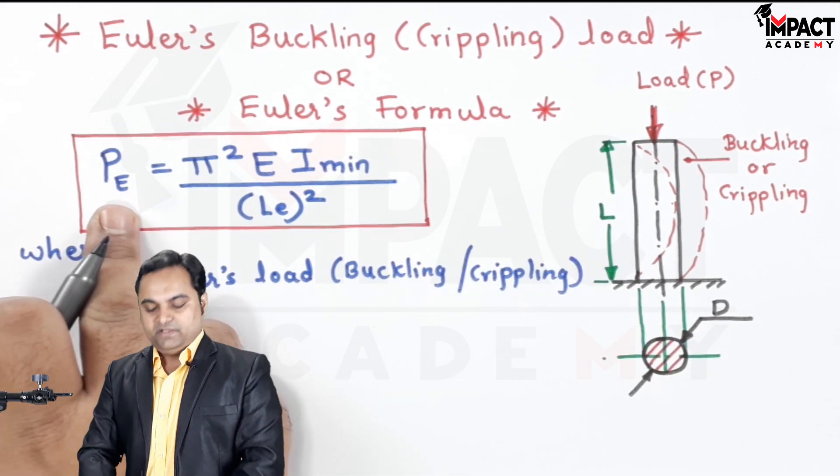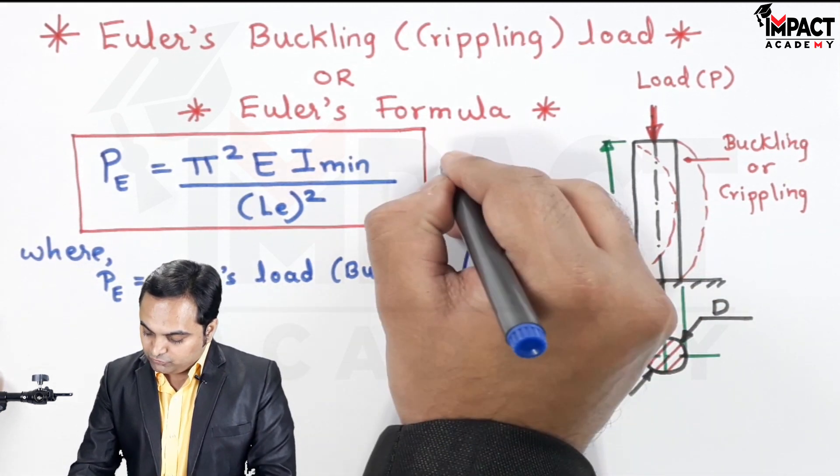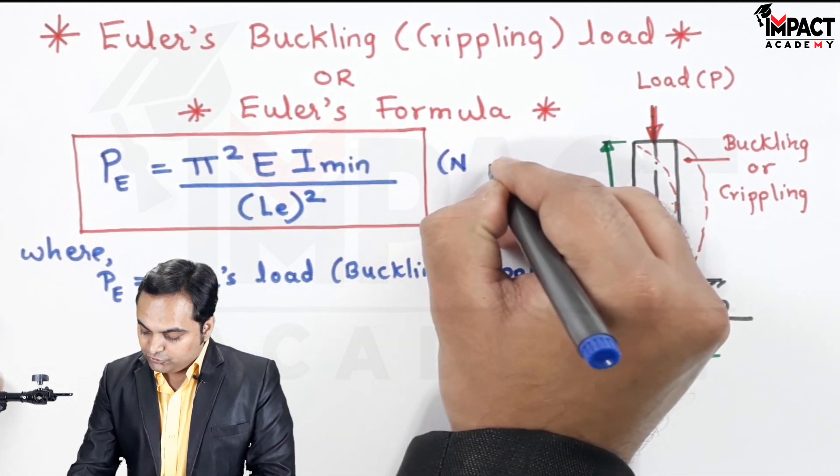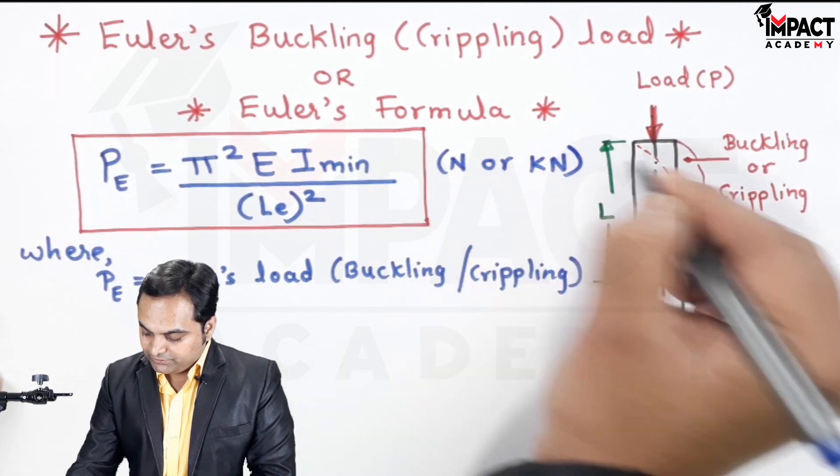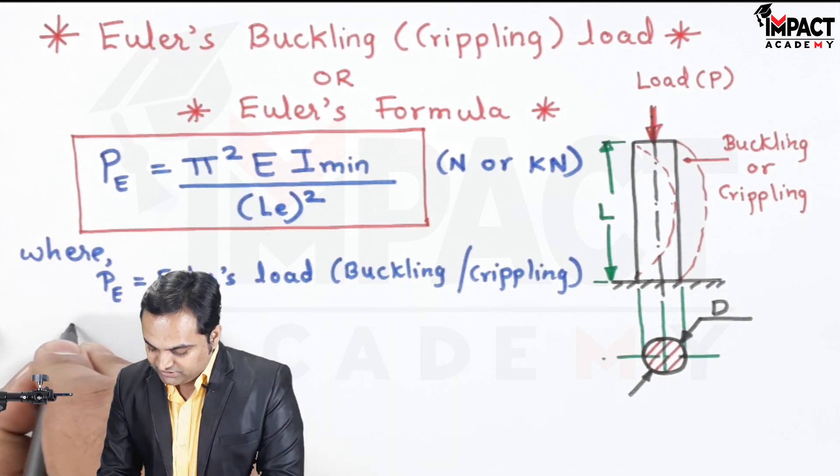P suffix E is the Euler's load, which is the Euler's buckling or crippling load. Since it is load, it would be having a unit of either Newton or it can be in terms of kilonewton. Next, pi is a constant. Then E, which is the Young's modulus.